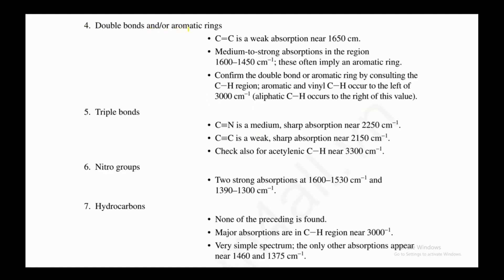Rule number four: for double bonds and aromatic rings — C=C is a weak absorption near 1650 cm⁻¹. Medium to strong absorption in the region 1600 to 1450 cm⁻¹ often implies an aromatic ring. Confirm the double bond or aromatic ring by consulting the CH region: aromatic and vinylic CH occur above 3000 cm⁻¹ (to the left), while aliphatic CH occurs below 3000 cm⁻¹.